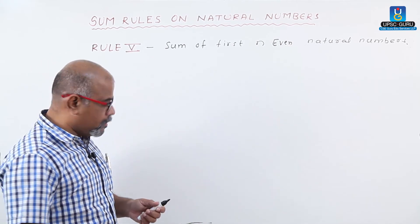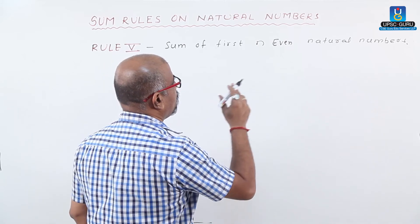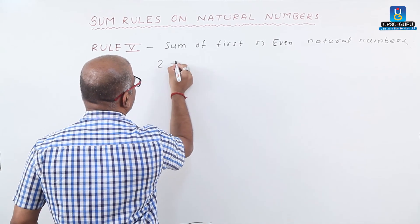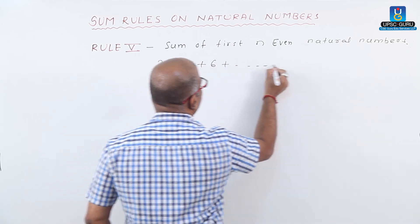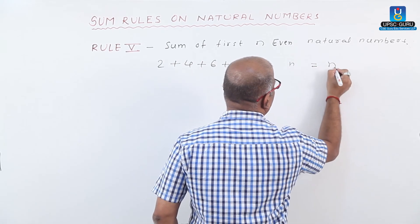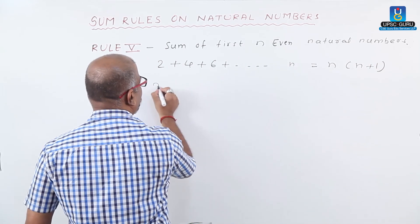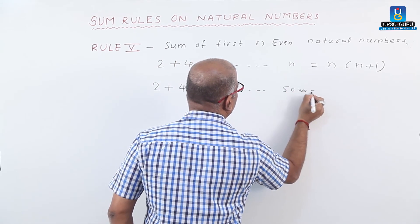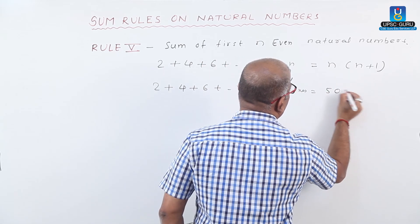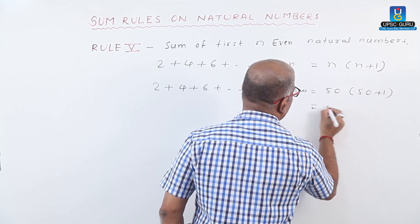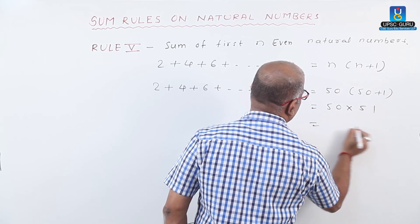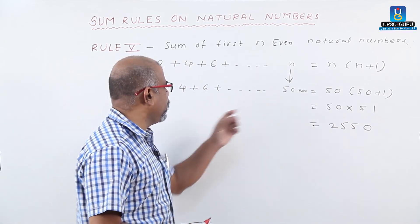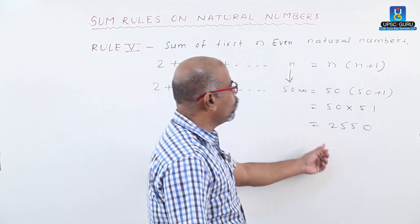Rule number 5: the sum of the first n even natural numbers. The even natural numbers start from 2: 2 plus 4 plus 6 up to n numbers. The formula is n into n plus 1. For example, find the sum of the first 50 even natural numbers. Here n is 50. So 50 into 50 plus 1 equals 50 into 51, which gives 2550. The sum of the first 50 even numbers is 2550. Thank you.